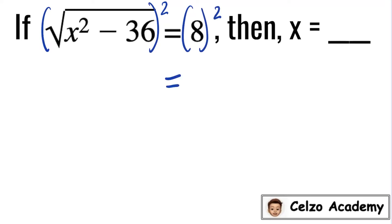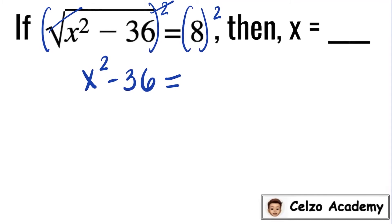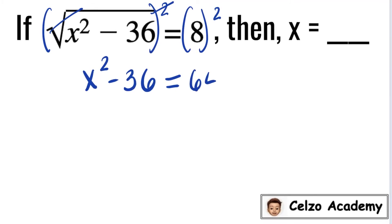Simplifying this, the square root and the square will cancel out. So the left side becomes x squared minus 36. On the right side, 8 squared means 8 times 8, and that is 64.